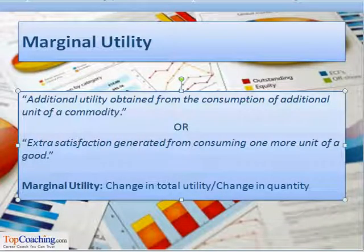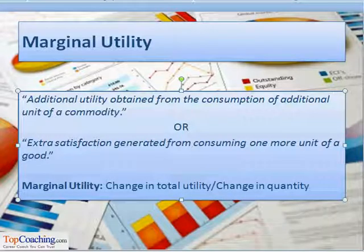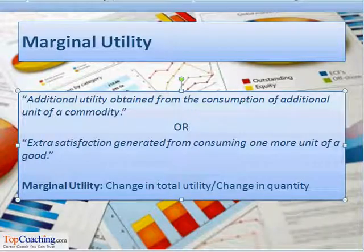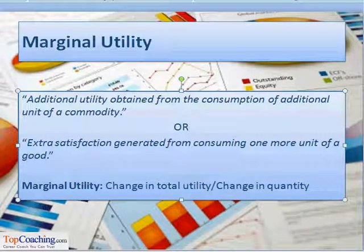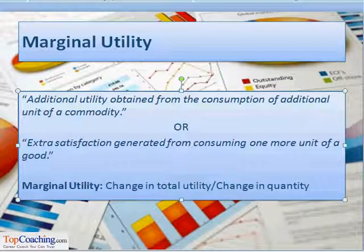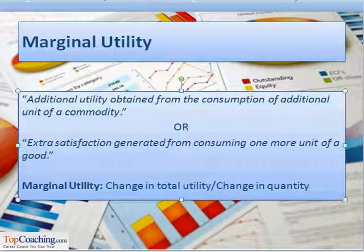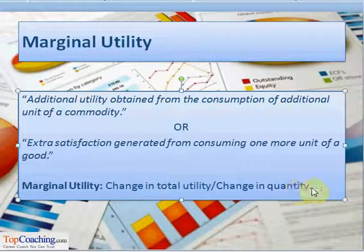Utility can be of various types. One form is marginal utility. Marginal utility is the additional utility obtained from the consumption of an additional unit of a commodity. For example, after eating one ice cream cone, if we eat another cone of ice cream we get additional satisfaction — that is the marginal utility. It is specified as the change in total utility divided by the change in quantity.